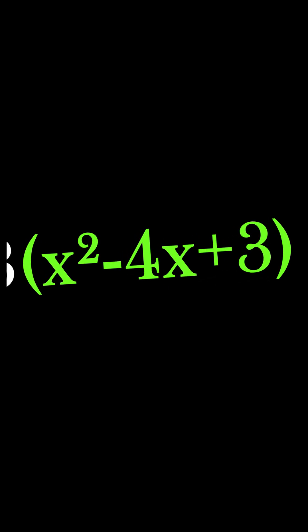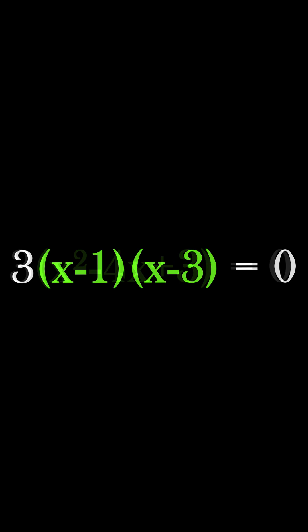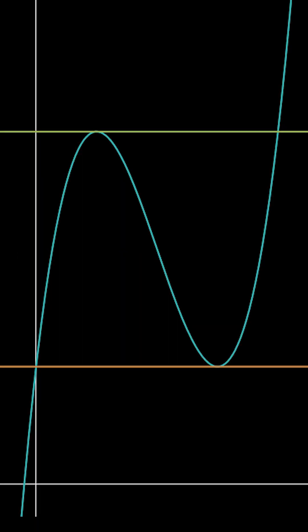This is a simple trinomial, so I know that our factors are both 1 and 3. Therefore, the turning points occur at x equals 1 and x equals 3.